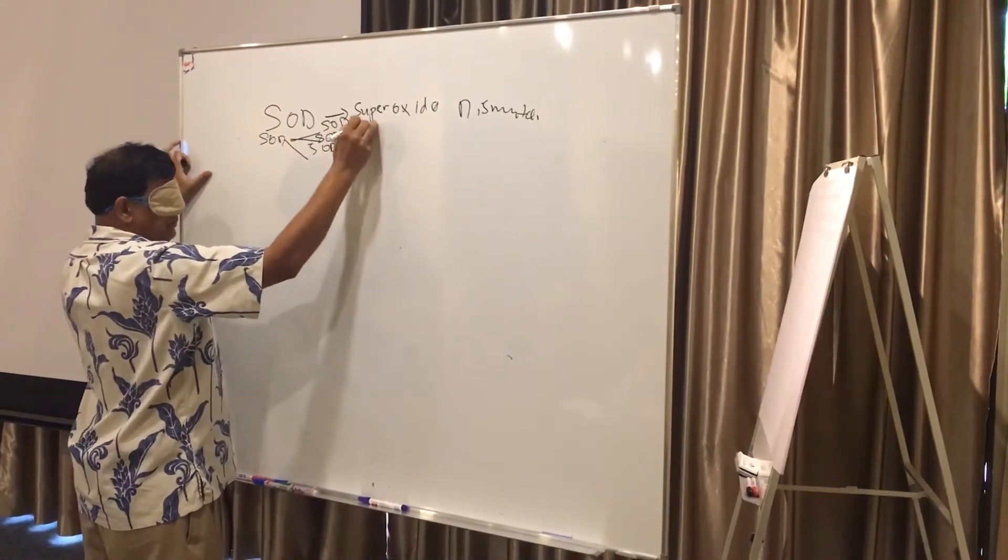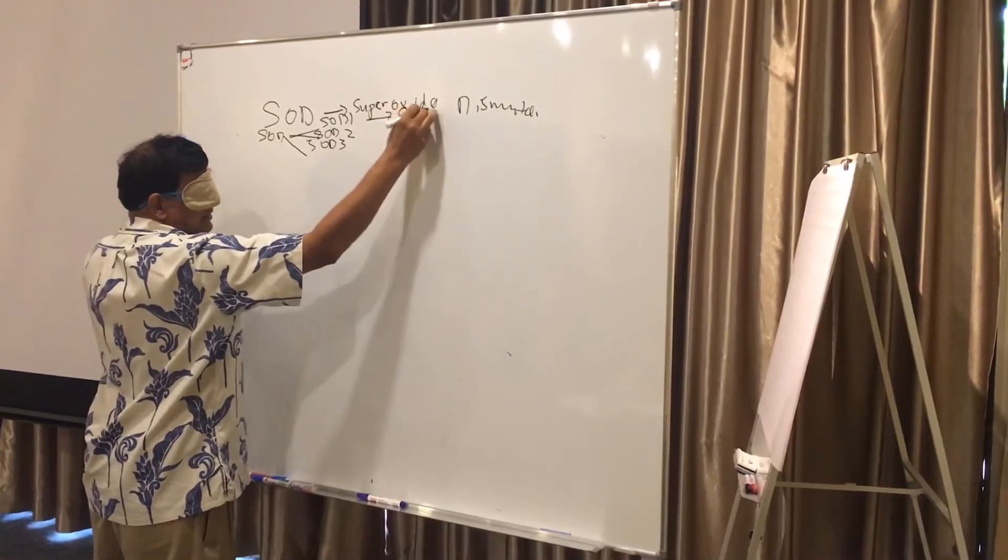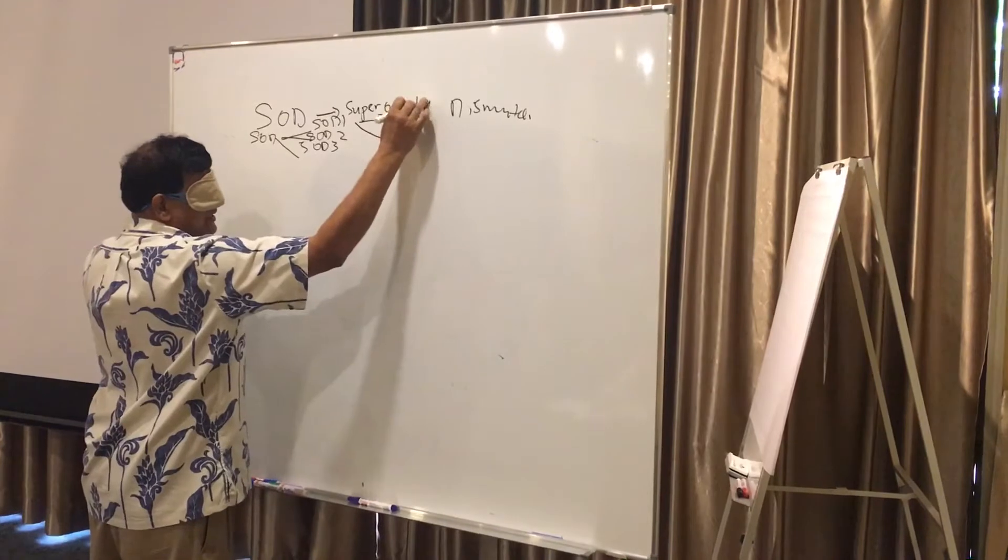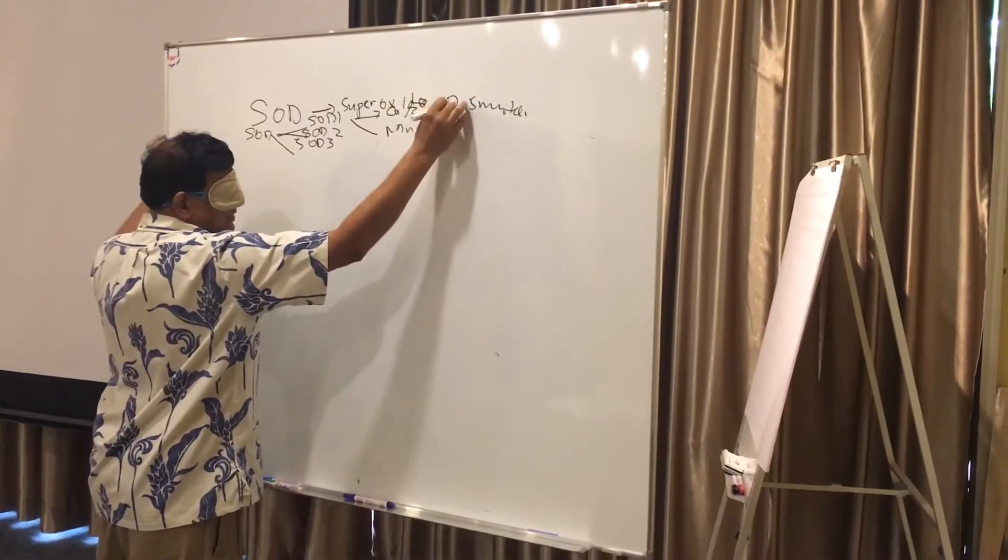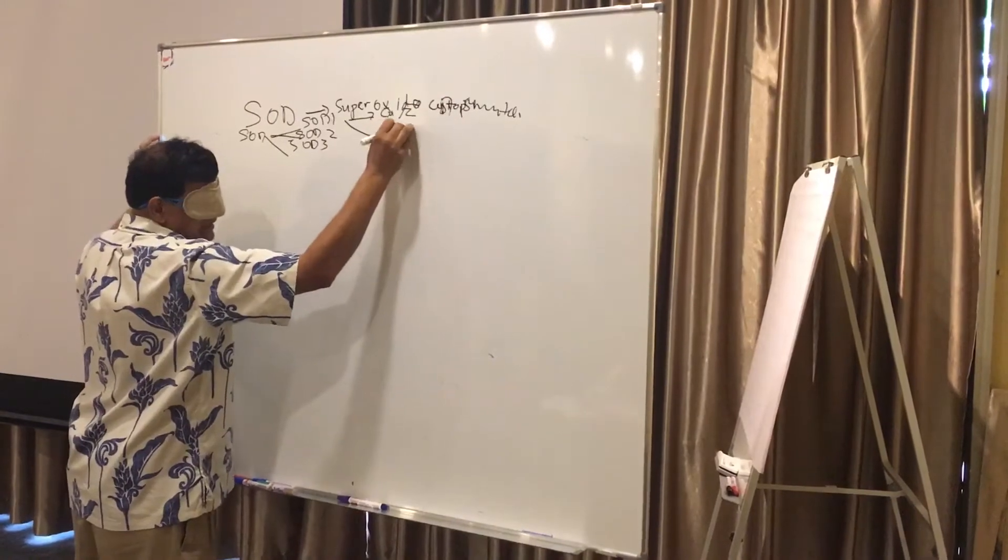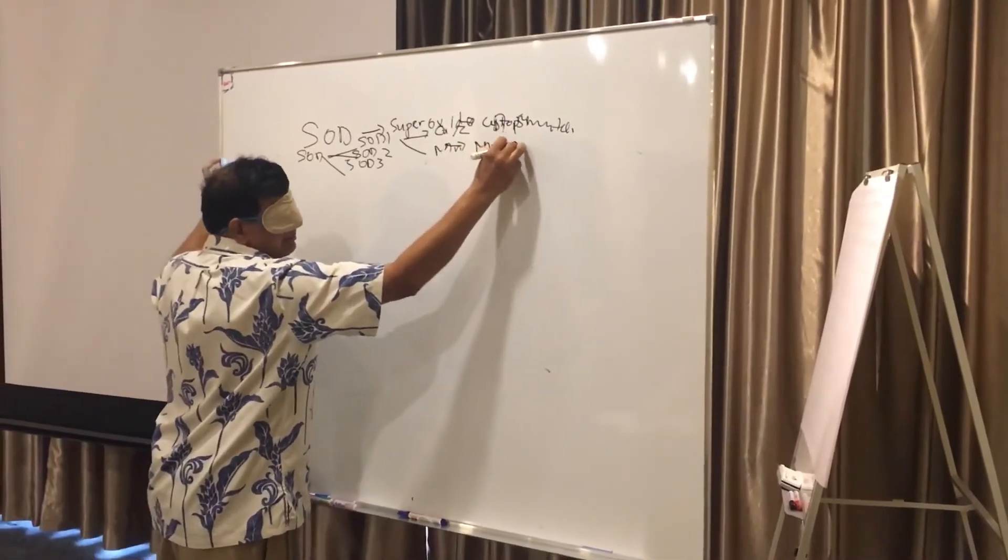And SOD is basically divided into copper, zinc, and manganese. Copper zinc is in the cytoplasma of a cell. Manganese is part of mitochondria matrix.